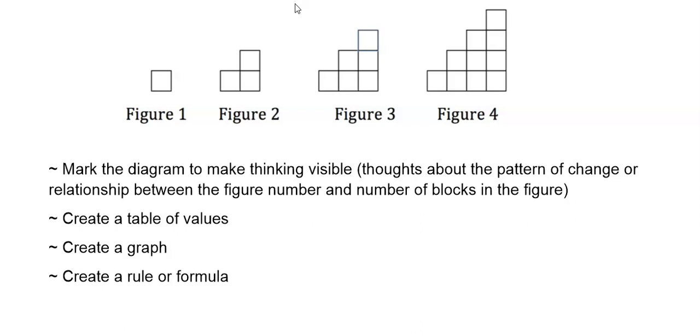We're going to mark the diagram to make our thinking visible, and when I say our thinking, that would be our thoughts about the pattern of change or the relationship between the figure number and the number of blocks in the figure. We'll look at a table and graph, and we'll create both a recursive rule and an explicit rule. We'll also look at this pattern of change to see if we can identify what type of function should be used to model this data.